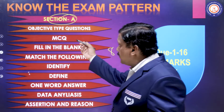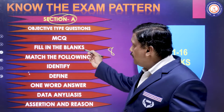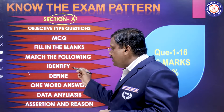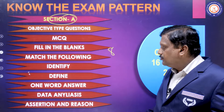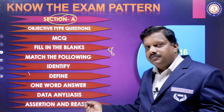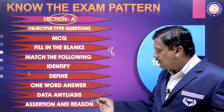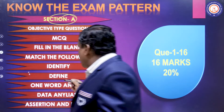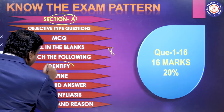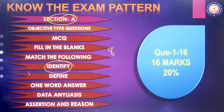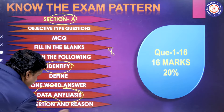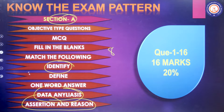The eight types in Section A are: MCQ, fill in the blanks, match the following, identify, define, one word answer, data analysis, and assertion and reason. Identify, data analysis, and assertion and reason are the new pattern of exam introduced by CBSE.